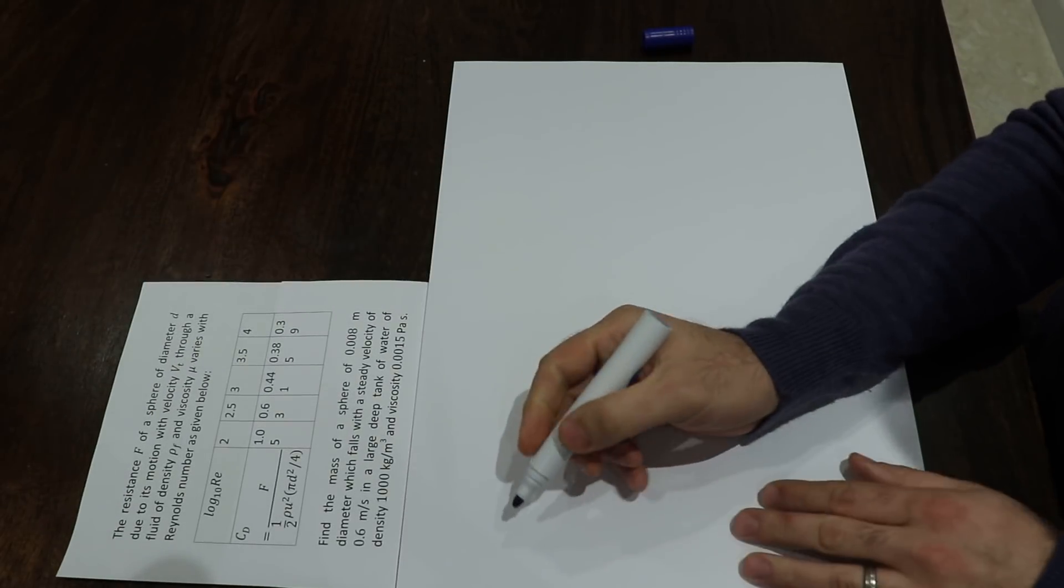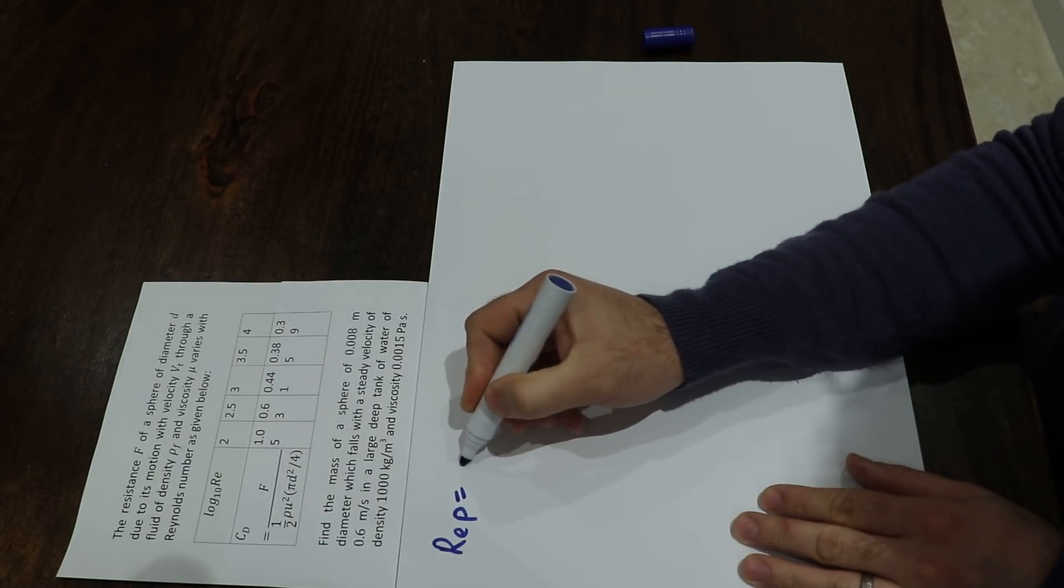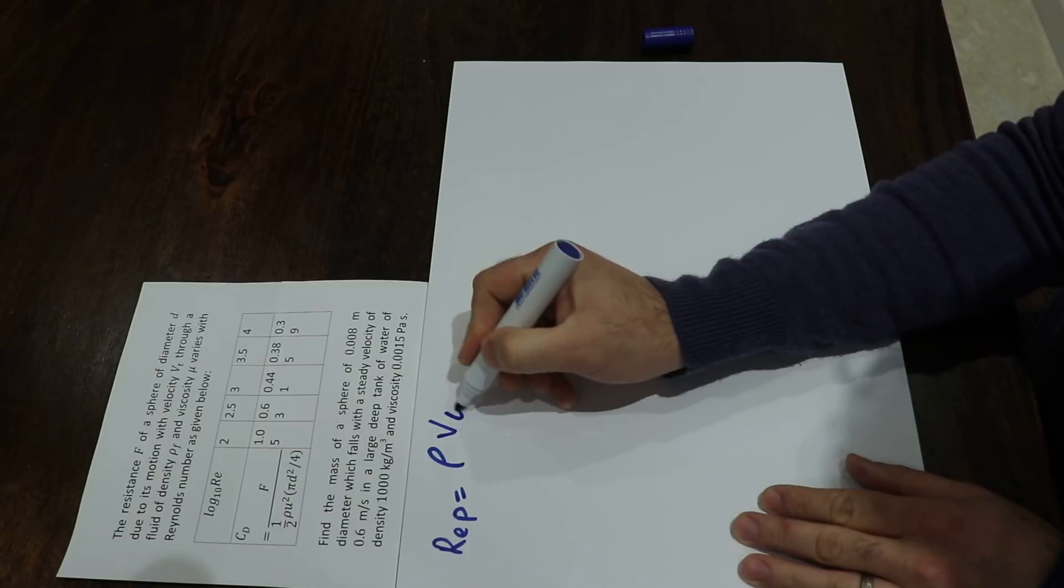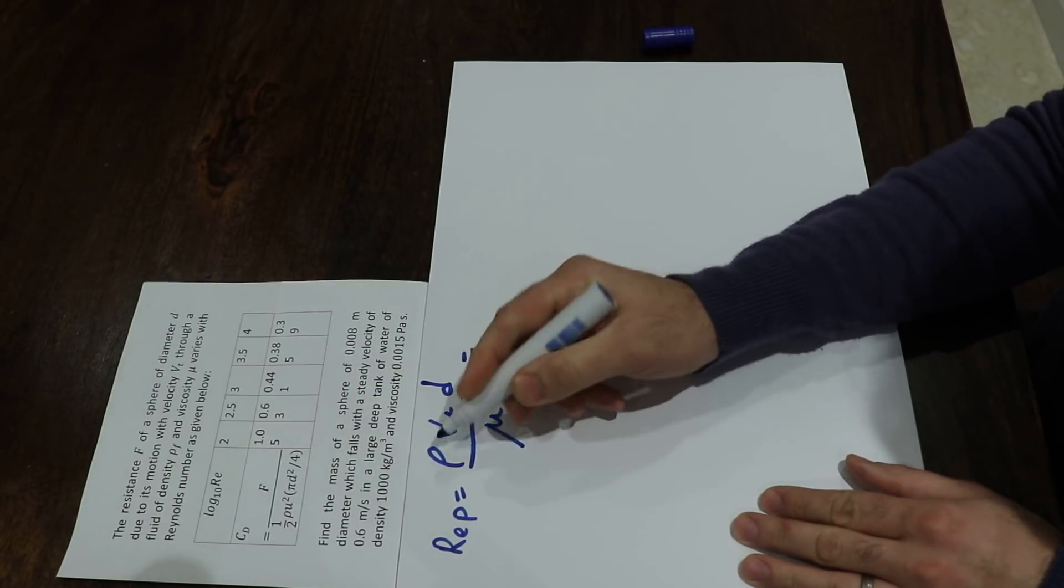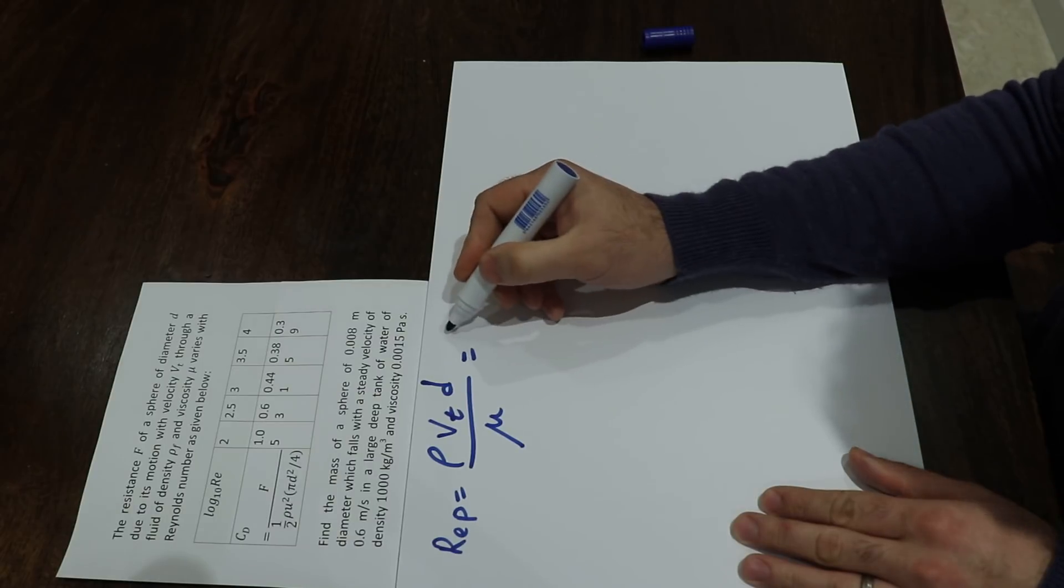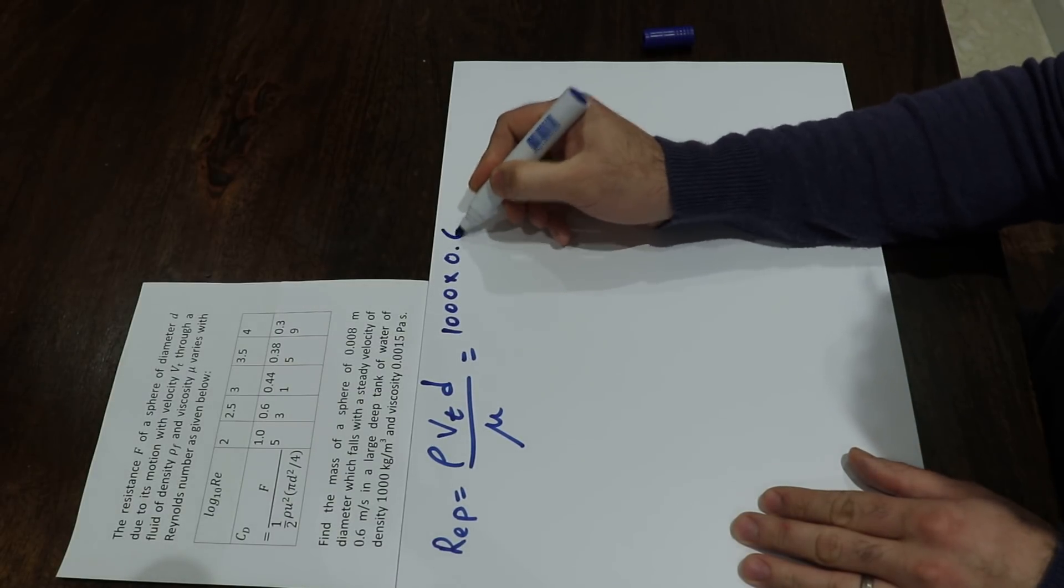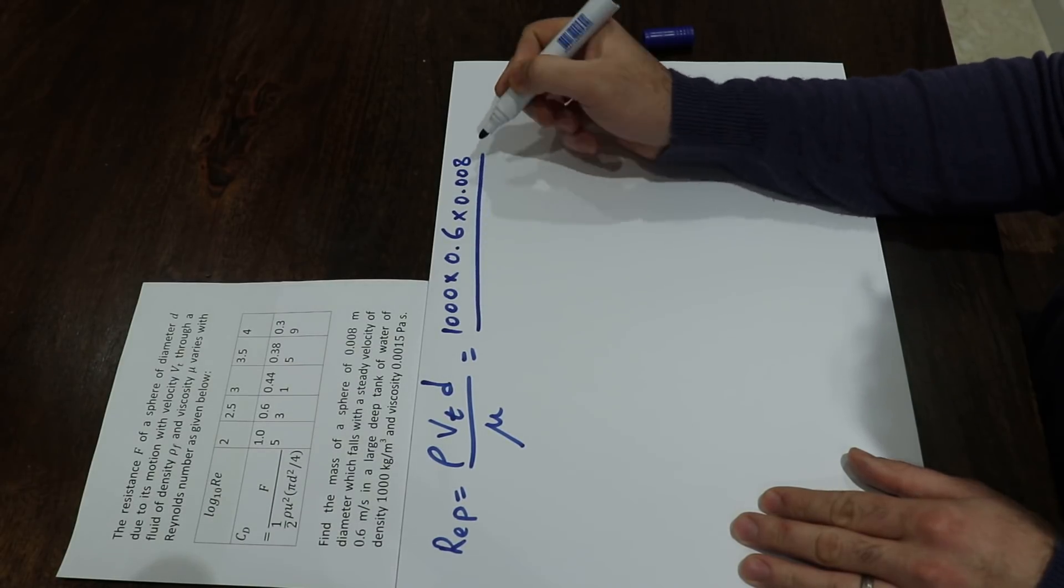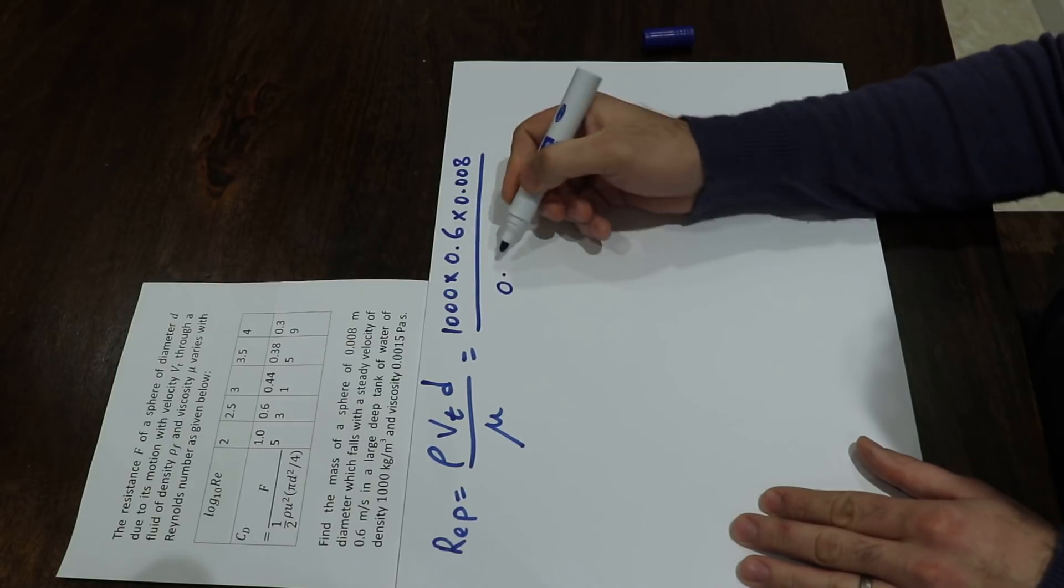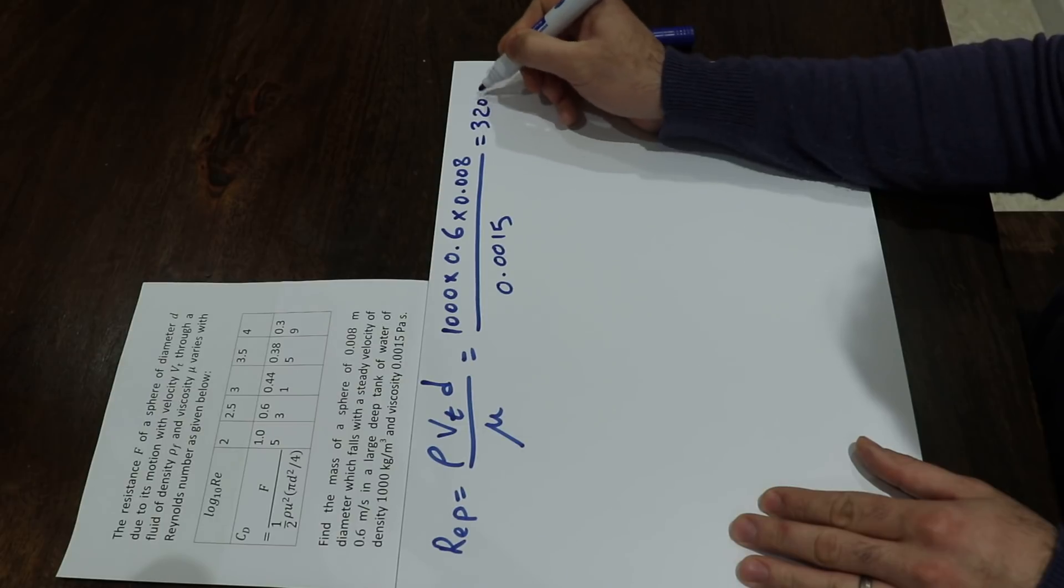To solve this question, first calculate the Reynolds number. Reynolds number equals ρ times velocity times diameter divided by viscosity. All values are given: ρ = 1,000, velocity = 0.6 m/s, diameter = 0.008, divided by viscosity = 0.0015, which equals 3,200.